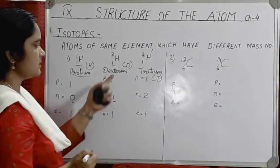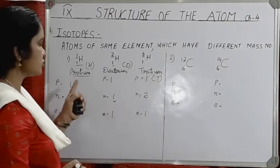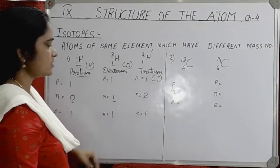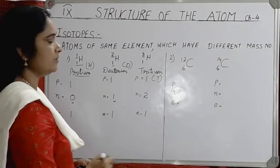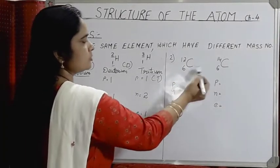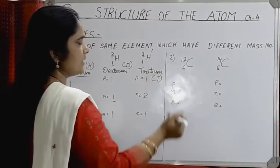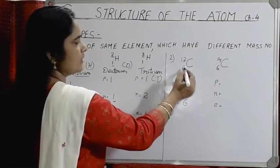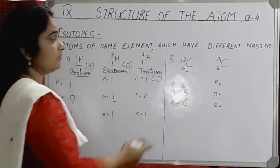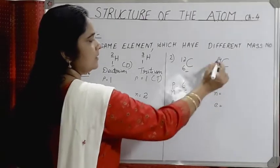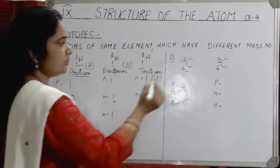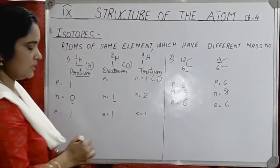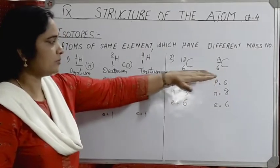Deuterium is used in nuclear reactors in the form of heavy water (D₂O), which is heavier than ordinary water (H₂O). Another element with isotopes is carbon. Carbon has two isotopes: carbon-12 and carbon-14. In carbon-12: atomic number 6, so protons = 6, electrons = 6, neutrons = 12 − 6 = 6. Carbon-12 is used as the reference for calculating atomic masses of other elements.